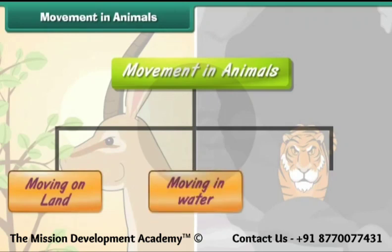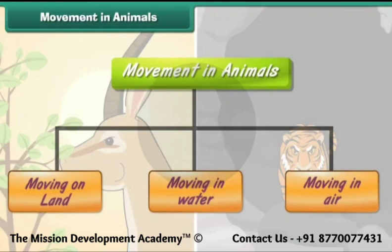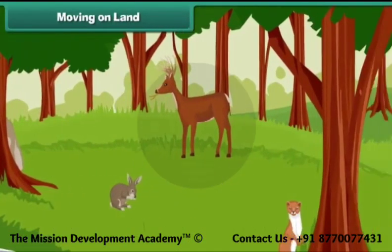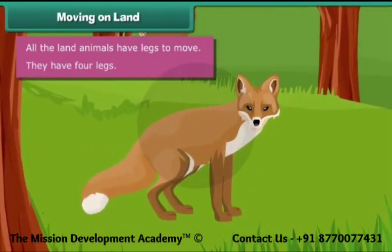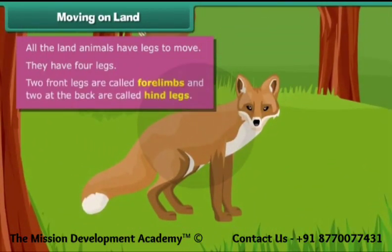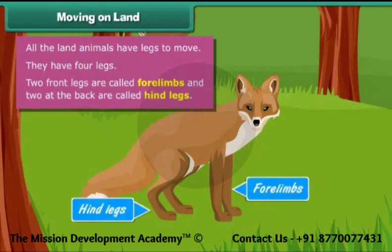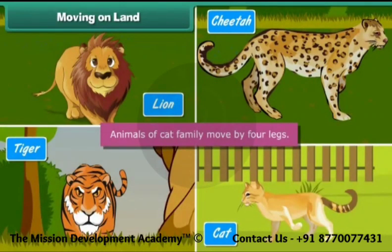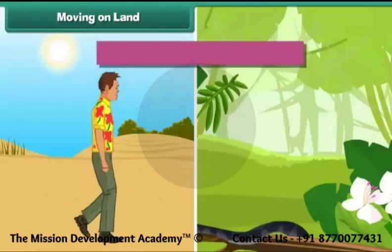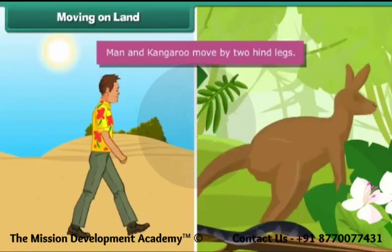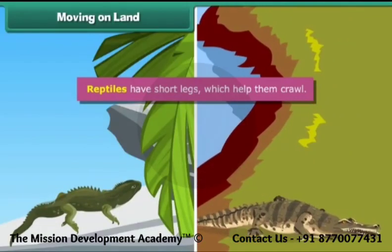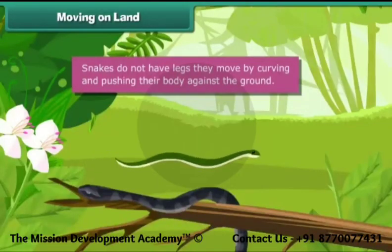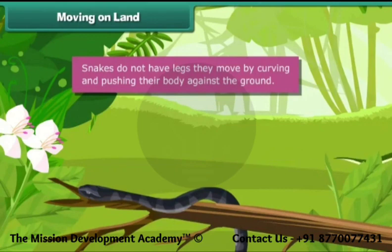All land animals have legs to move. They have four legs — two front legs called fore limbs and two at the back called hind legs. Animals of the cat family move by four legs. Man and kangaroo move by two hind legs. Reptiles have short legs which help them crawl.